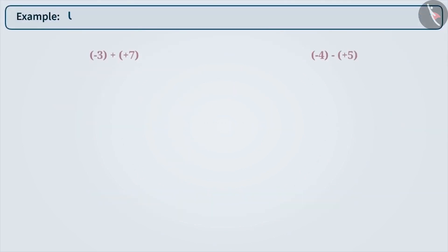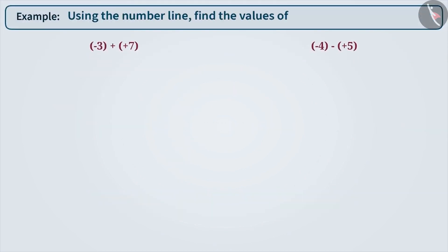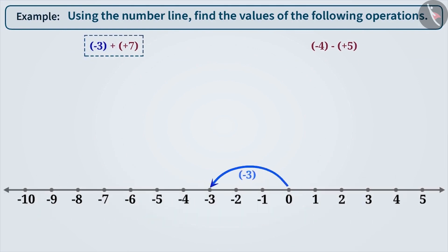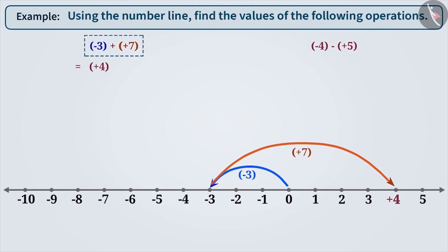Using the number line, find the values of the following operations. In minus 3 plus plus 7, the first number is minus 3. Therefore, we move 3 steps towards the left from 0 on the number line. Since plus 7 is a positive integer, we move 7 steps towards the right from minus 3. Thus, we reach plus 4, which is the result of minus 3 plus plus 7.